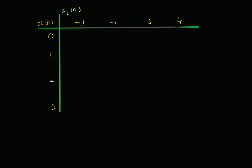We fill the table with products of individual corresponding elements. The first column is {0, -1, -2, -3}, the second column is also {0, -1, -2, -3}, the third column is {0, 3, 6, 9}, and the last column is {0, 4, 8, 12}.